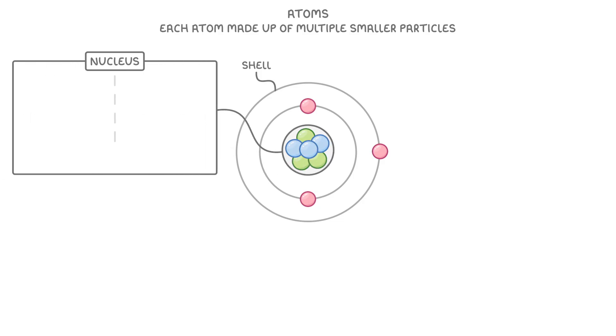The nucleus itself is made up of two different types of particles, protons and neutrons, which are packed together in a tight ball.